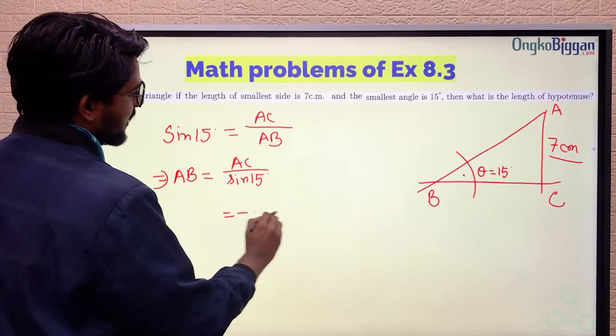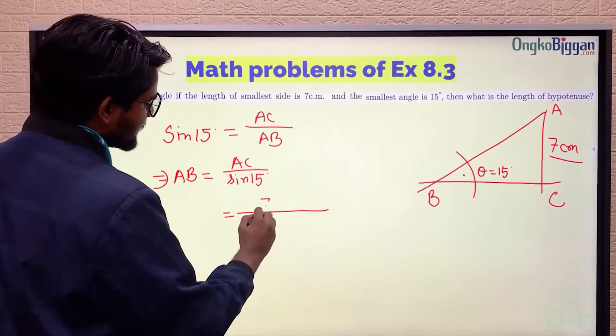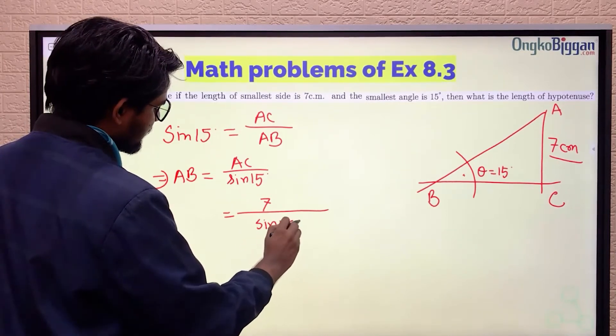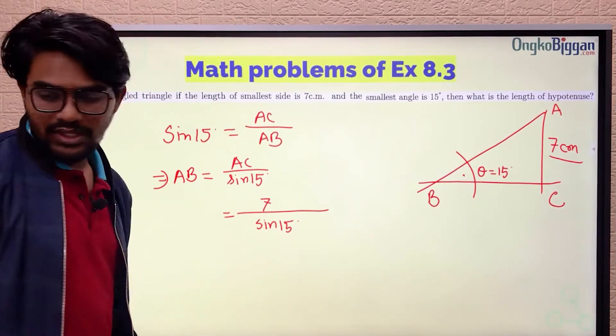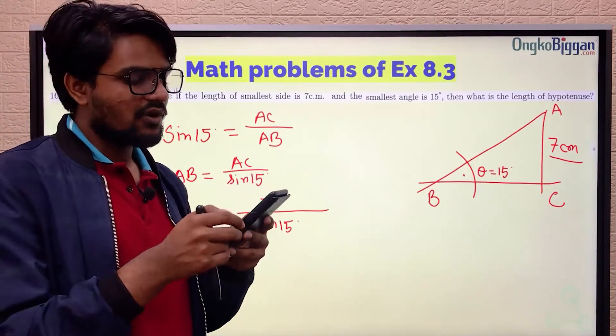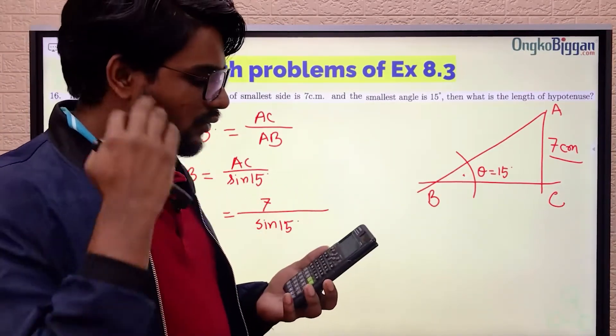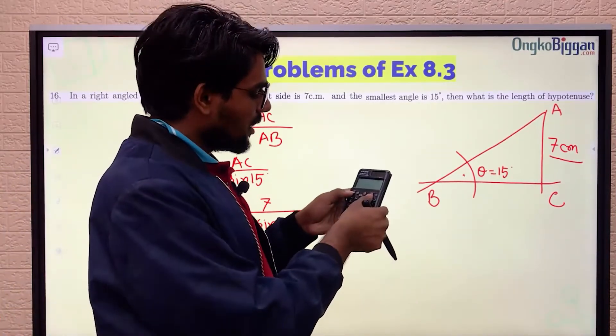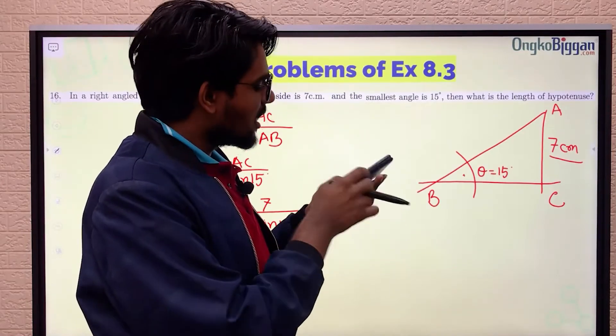The value of AC is given as 7 centimeters, and we have the value of sin 15°. Our calculator will do the job, but before that we need to convert our calculator into degree mode if it is in radian mode.